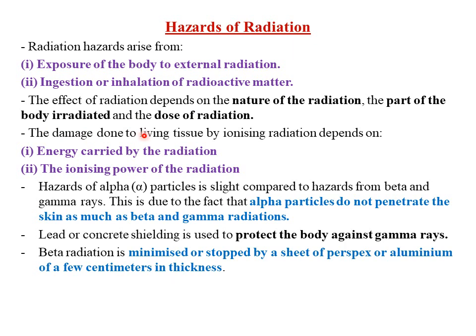The damage done to living tissues by ionizing radiation depends on: one, the energy carried by the radiation. The more the energy, the more the damage. The less the energy, the less the damage. Then the ionizing power of the radiation. The more the ionizing power, the more the damage to the living tissues as opposed to other radiations which have very low ionizing power.